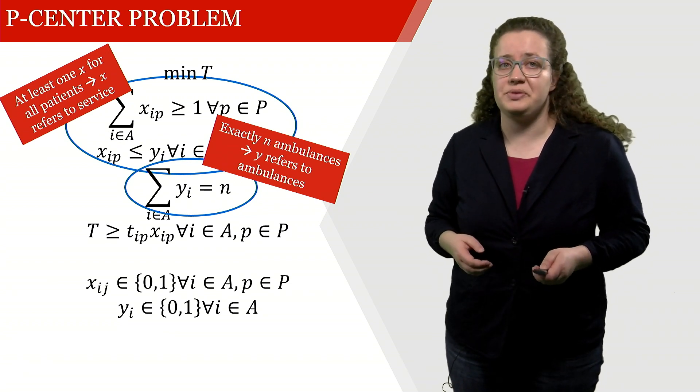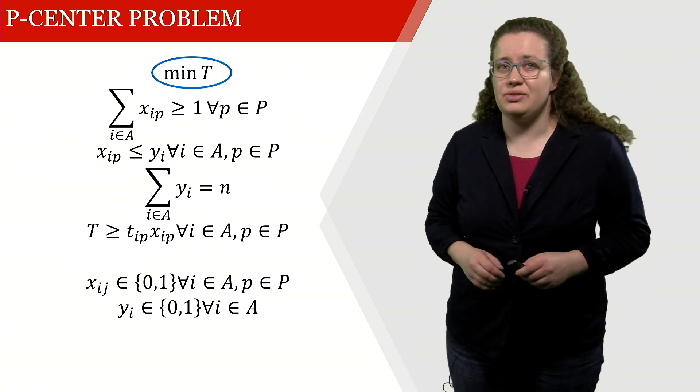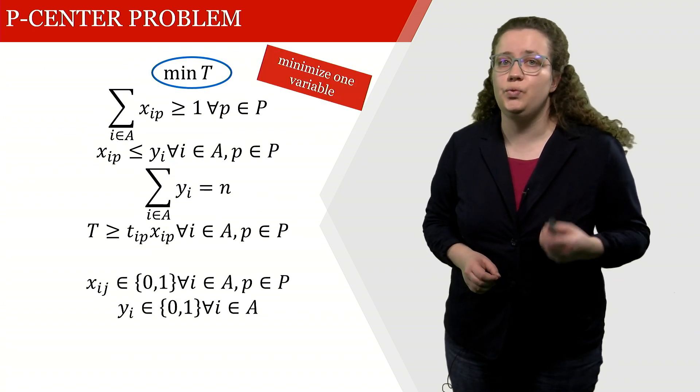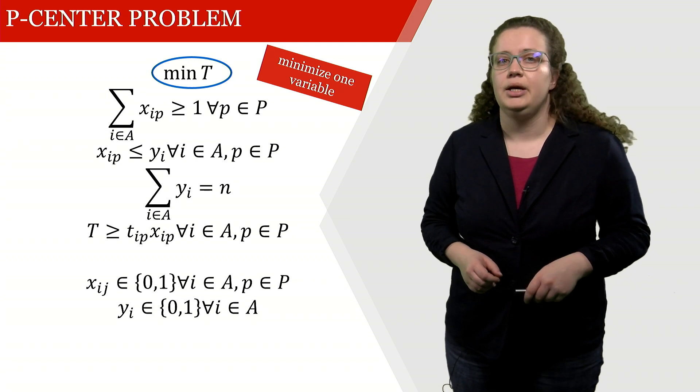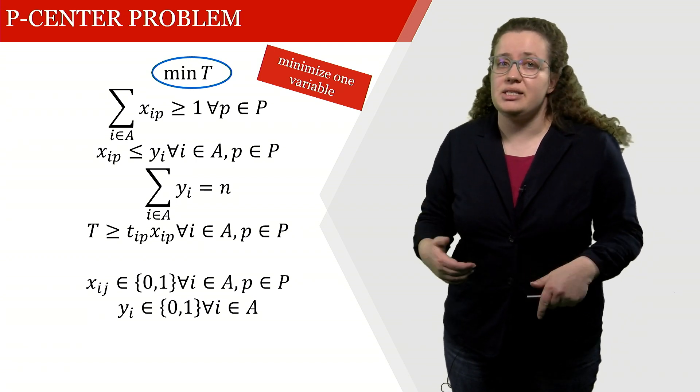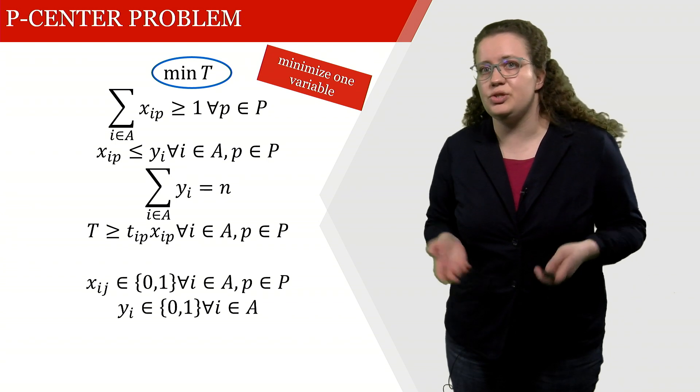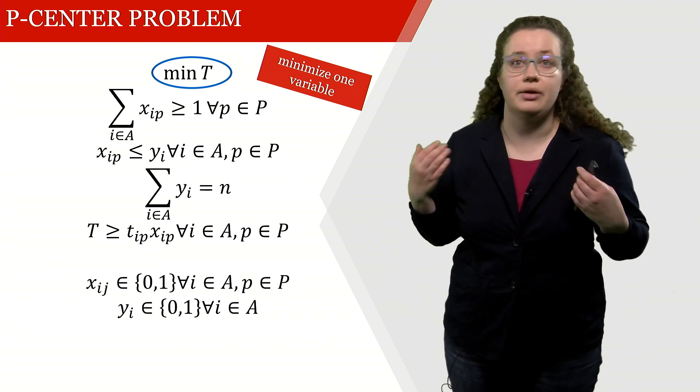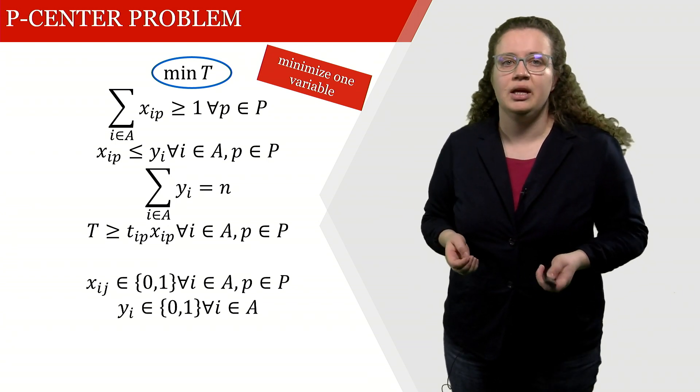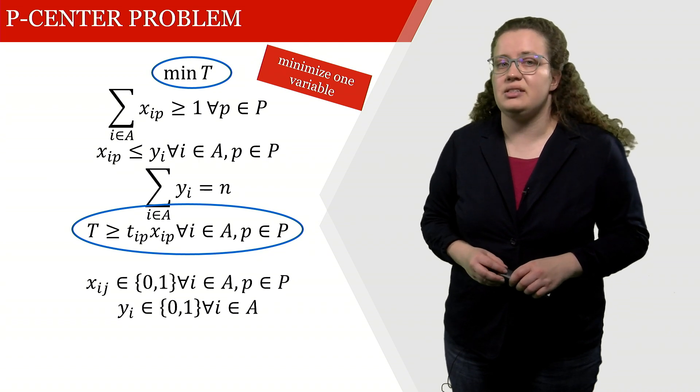Now we can look into the objective function. So the objective function actually is only one variable. So we're only minimizing t and then now we can look into where we actually define t based on the other decision variables. And t is defined down here.